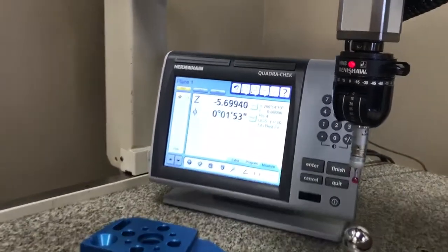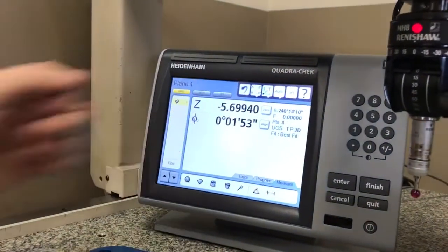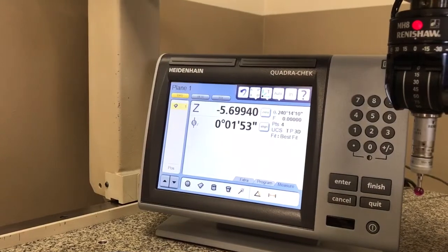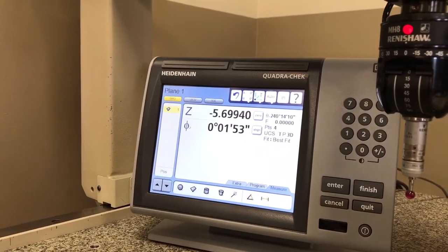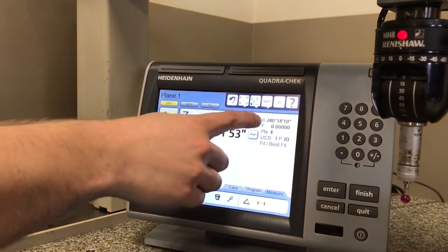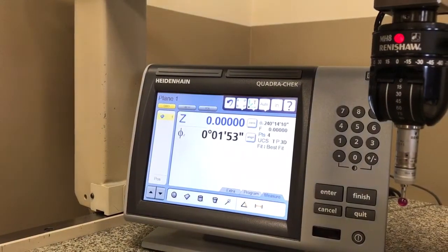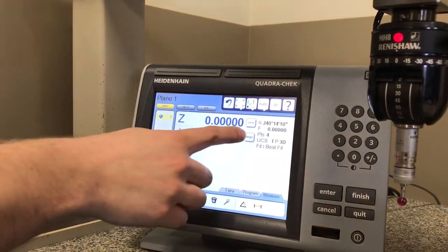Now you notice these coordinates pop up on your screen. I can make that plane my zero datum point in the z direction by pressing here, and I can level the part by pressing this align button.